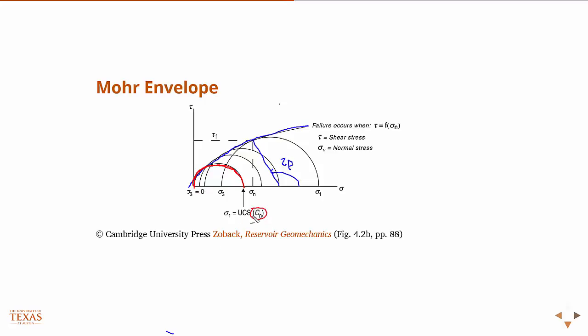You'll see this in Zoback's book. You guys ask me where we're at in the book. We're in chapter 4 now, and I label these figures when I use them from the book, so if you read the pages around that figure, that's where we are. In Zoback, you'll see this unconfined compressive strength labeled as C0.